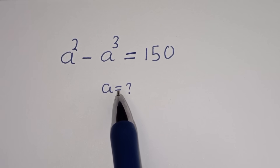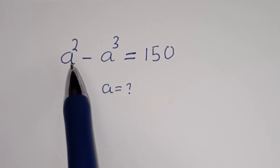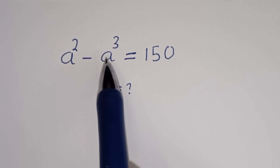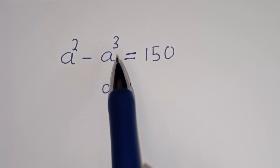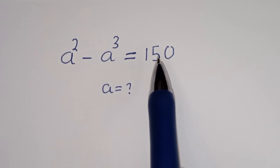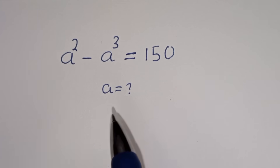Hello, how to solve for A in this equation: A squared minus A to the power of 3 is equal to 150.